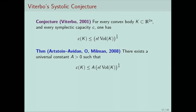Quite recently, Abbondandolo, Bramham, Hryniewicz, and Salomão proved a local version of Viterbo's conjecture in R^4: there exists a certain neighborhood of the Euclidean ball such that the conjecture holds for convex domains inside this neighborhood — so this is progress in this direction.